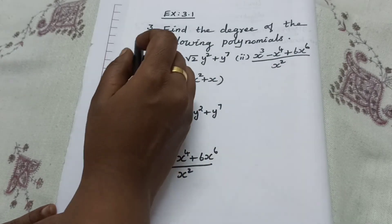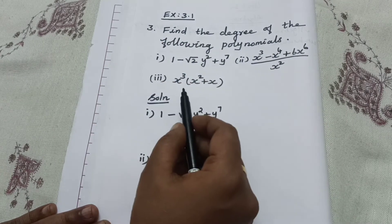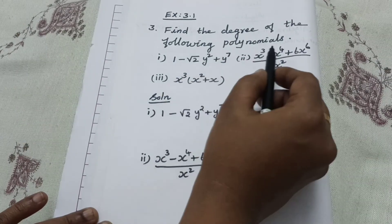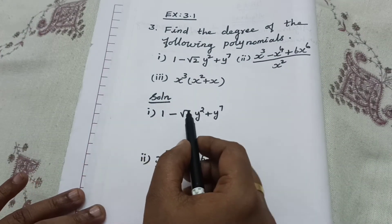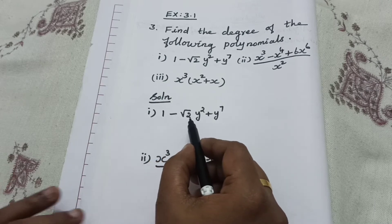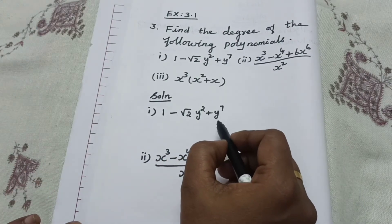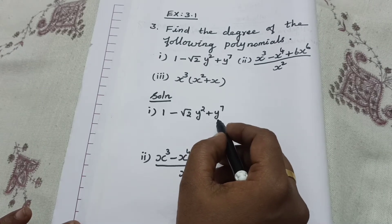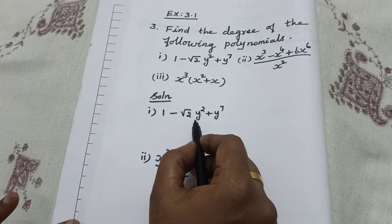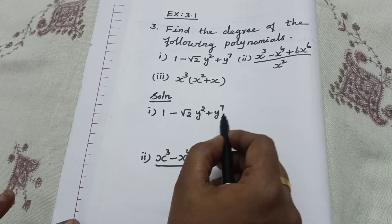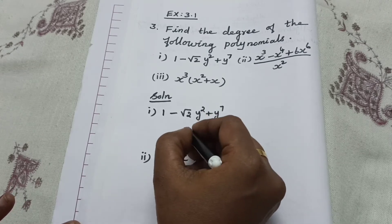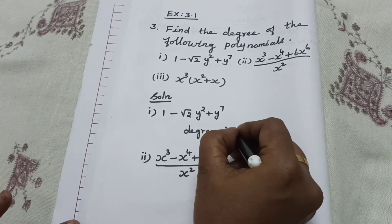Now, Exercise 3.1, third question, first subdivision: find the degree of the following polynomial. The polynomial is 1 minus root 2 times Y squared plus Y power 7. The variable is Y. The highest power of Y is 7. Therefore, the degree is 7.